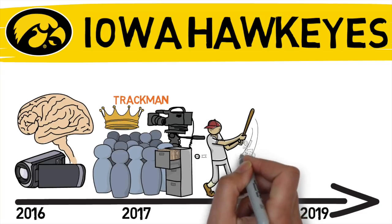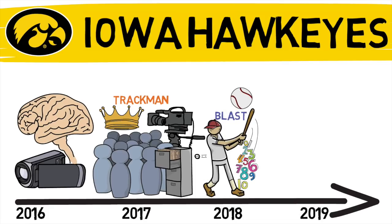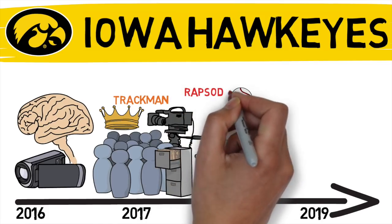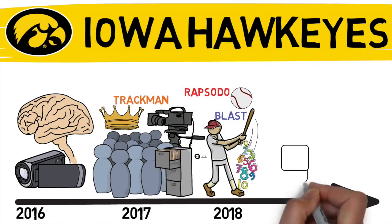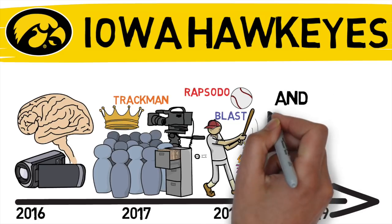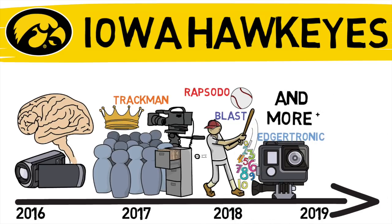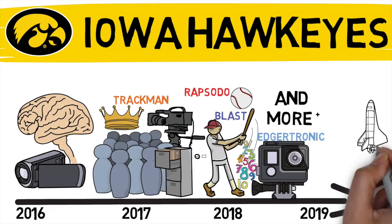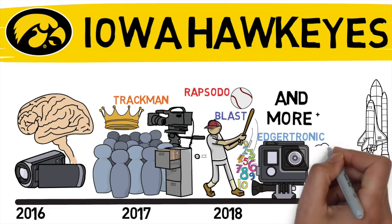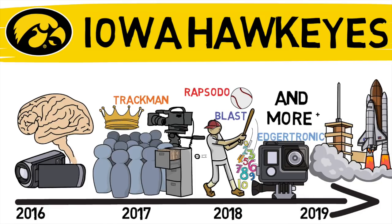Since then we've added blast sensors, the Rapsodo and Edgertronics — I already made a video about one of these, you can check the link up top for that. And we've really just begun to refine our processes to become more efficient. While Iowa baseball is way ahead of the pack in many ways, it's still just taking off in terms of utilizing the technology that we have.